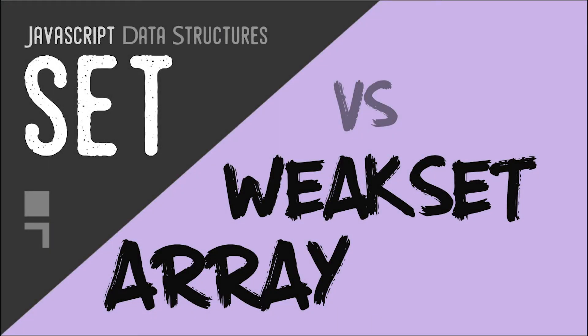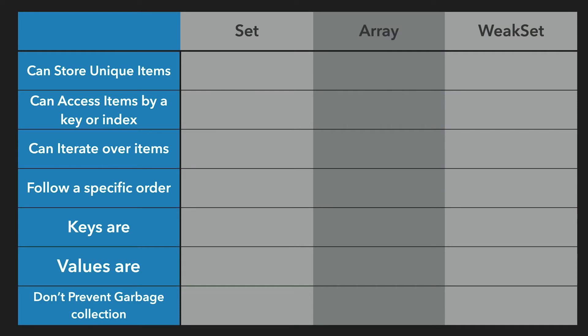ES6 gave us Set and WeakSet, and people never exposed to this got confused on how it differs from arrays and each other. So let's clear this out. It is clear that Set and WeakSet will make sure their items are unique — that's a built-in capability — and to accomplish the same thing with arrays you have to manually check every item to make sure.